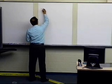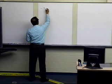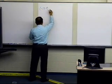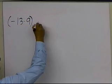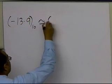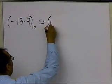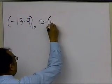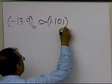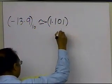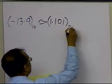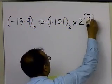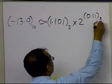So we have calculated minus 13.9 in base 10 to be approximately equal to negative 1.101 base 2, times 2 to the power 011 base 2.